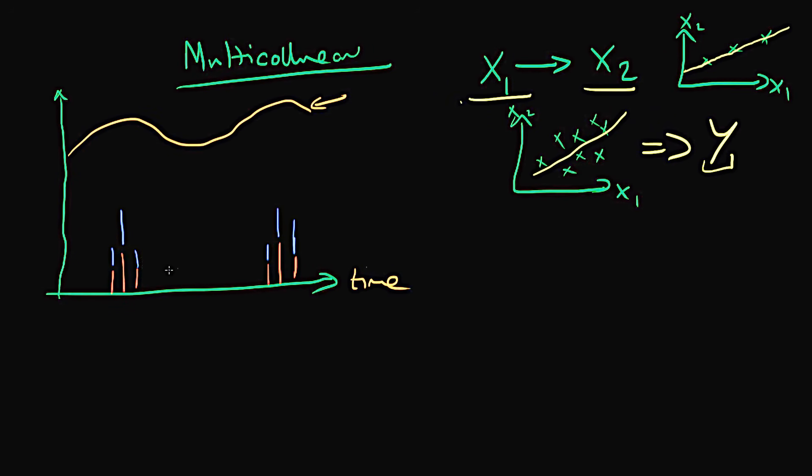So if we were to think about a graph of TV advertising spend against radio advertising spend, they would be highly correlated, although they won't be exactly correlated with one another. So it's something like this relationship here. There is some degree of positive correlation with one another.